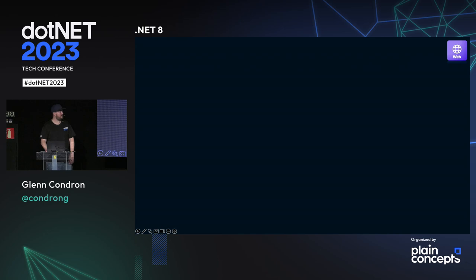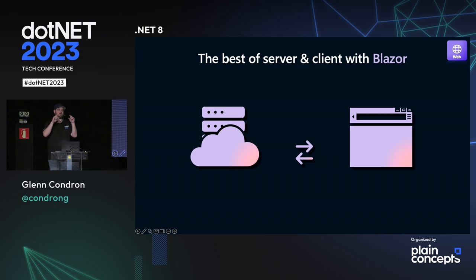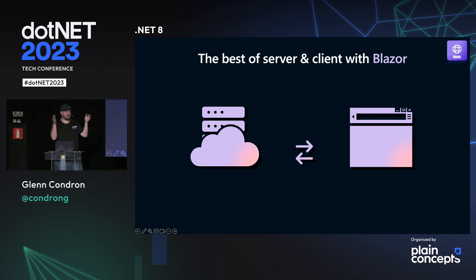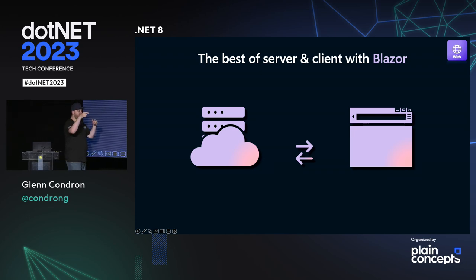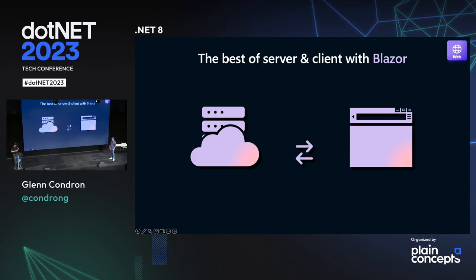The route tooling is cool, made by James Newton King of Newtonsoft.json fame. When you're building an ASP.NET Core application, you have a string for the route with curly brackets for parameters. The route tooling lets you colorize it, split it out, hover over pieces and see what they are — it makes it feel like real code instead of just a string. Now you'll actually be able to see in the tooling if you missed a brace or something like that.